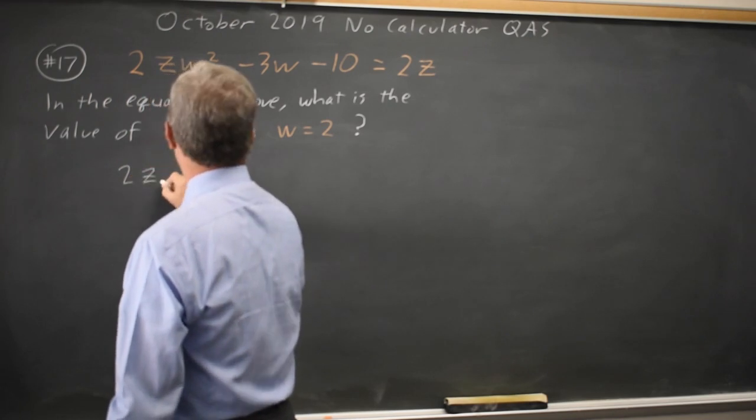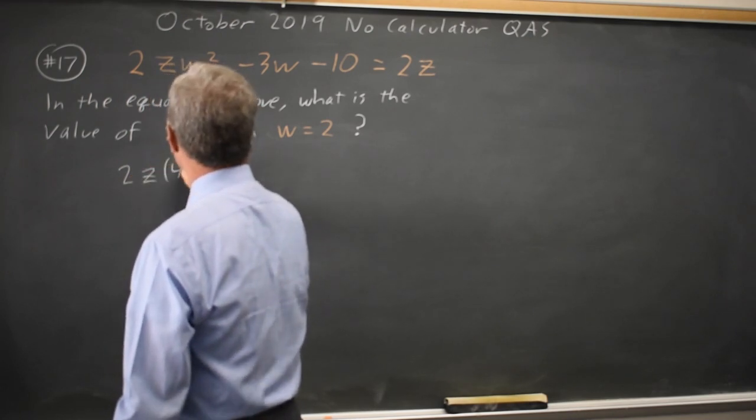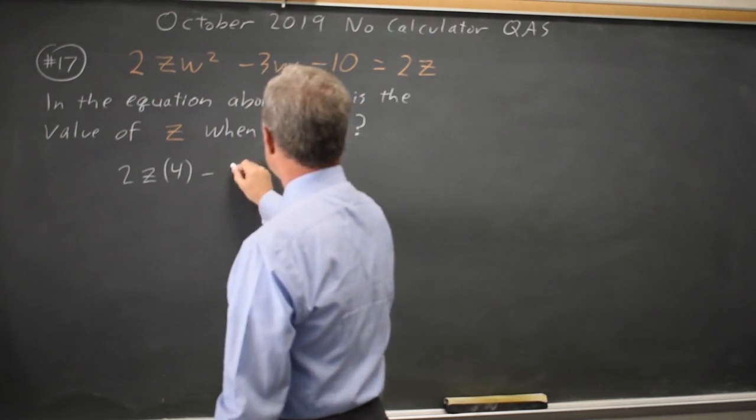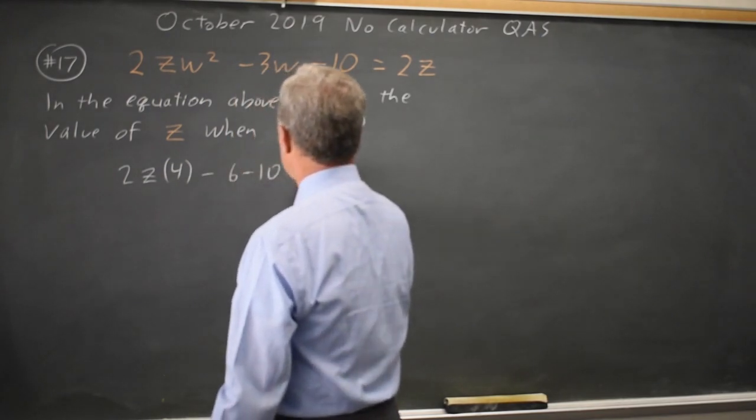I have 2z times 2 squared which is 4, minus 3 times 2 is 6, minus 10 equals 2z.